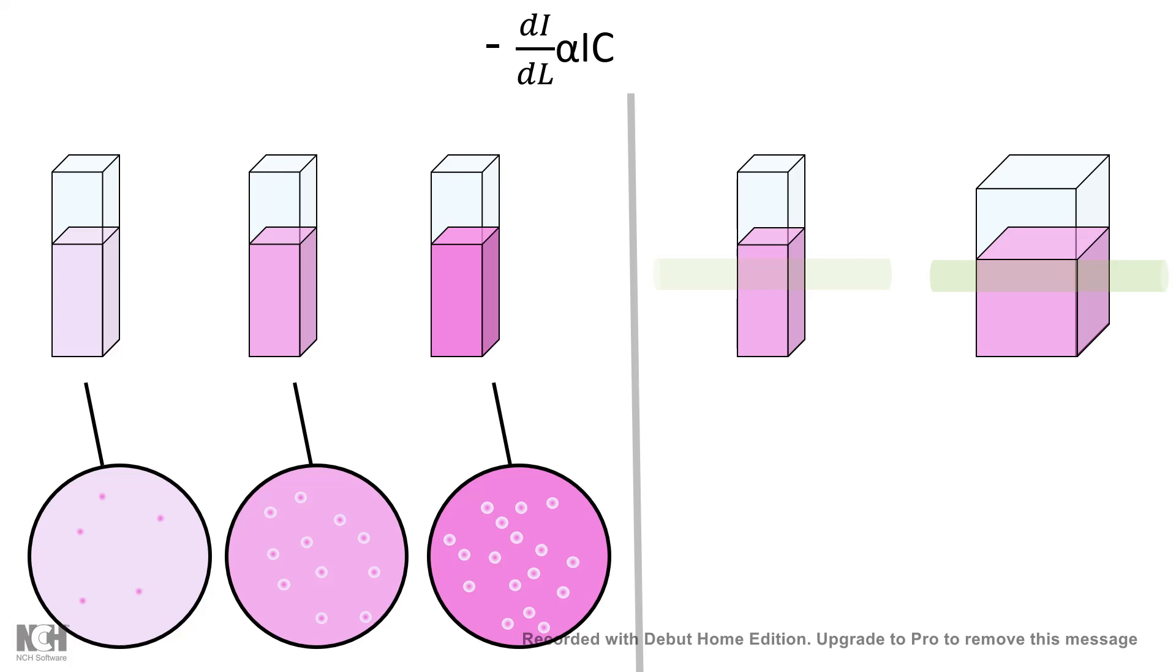It is also dependent on the light path because let's say we have two cuvettes. One has a length, let's say L, and another has 2L. So the cuvette which has a length of 2L, when light passes through that cuvette, the probability is more that it would encounter more solution particles, right?